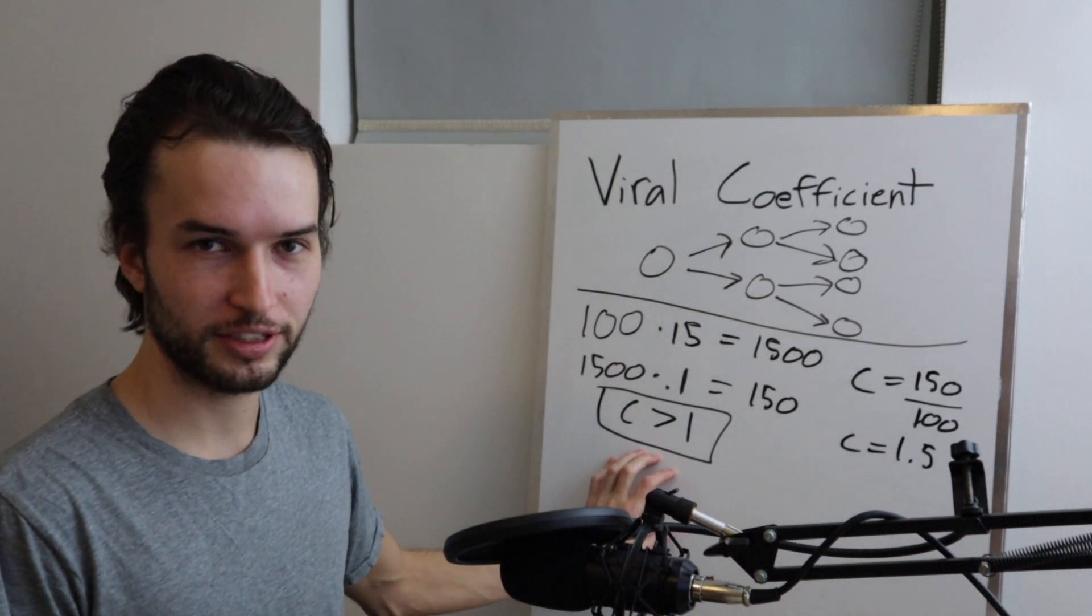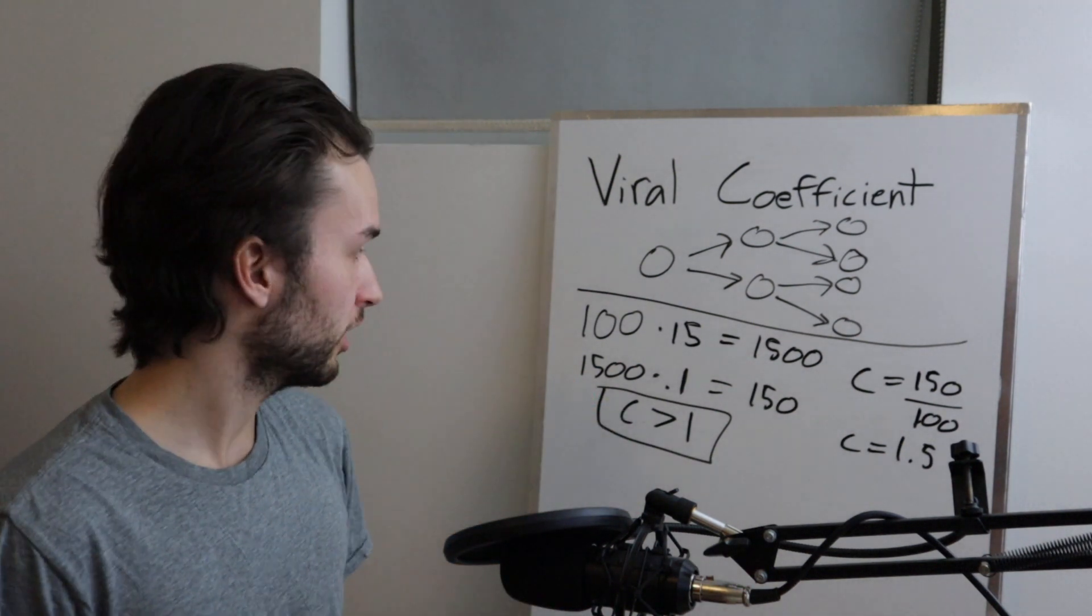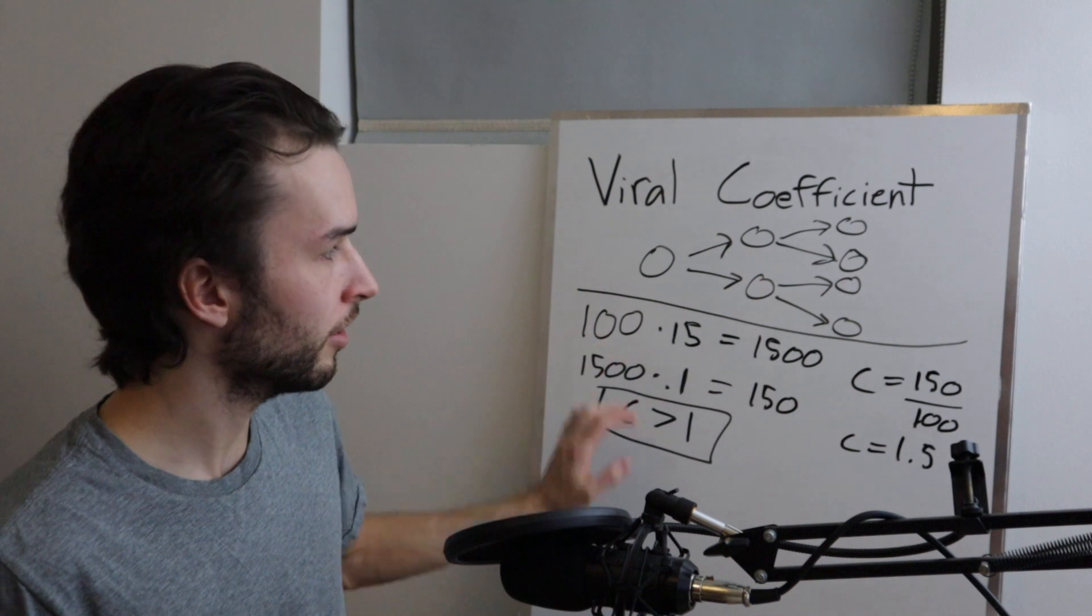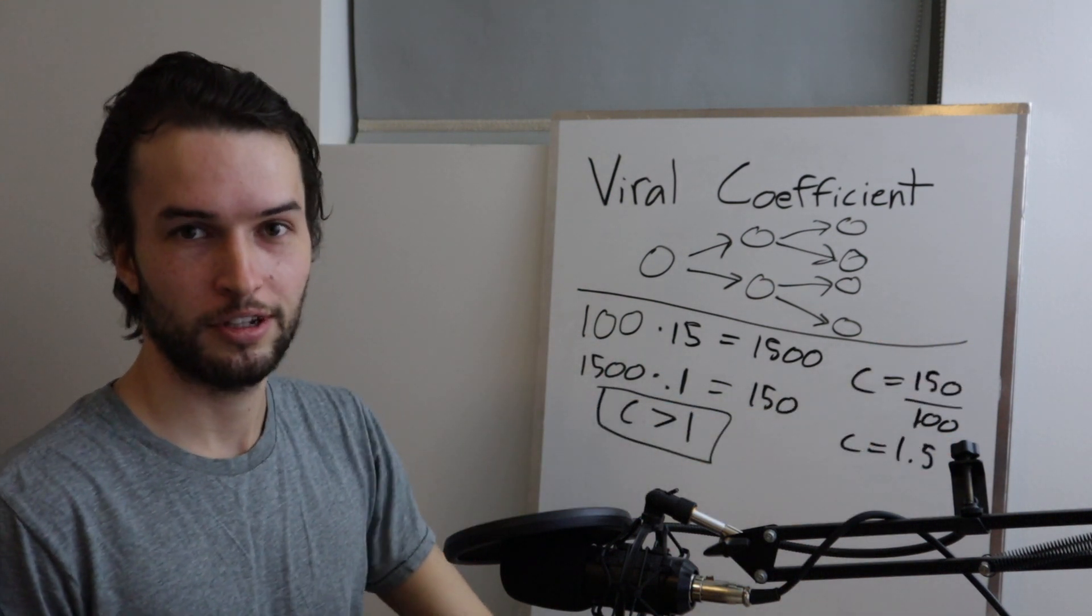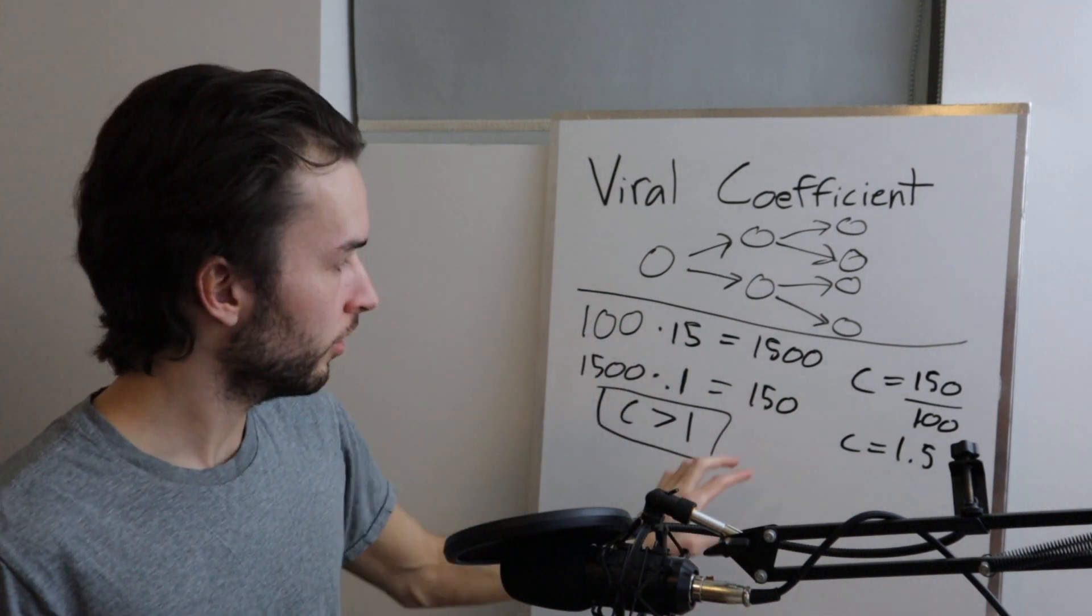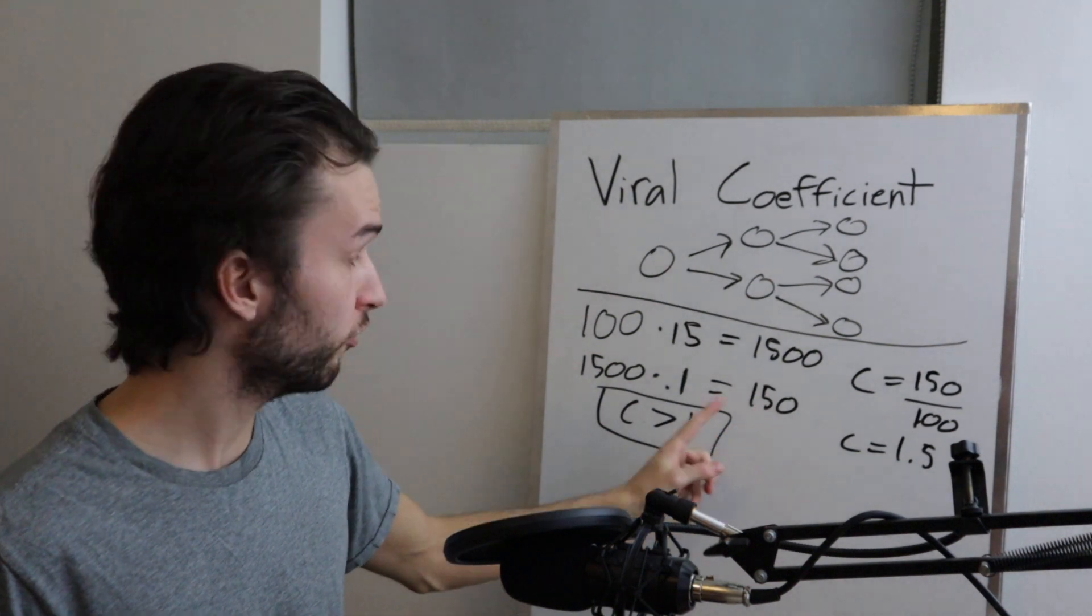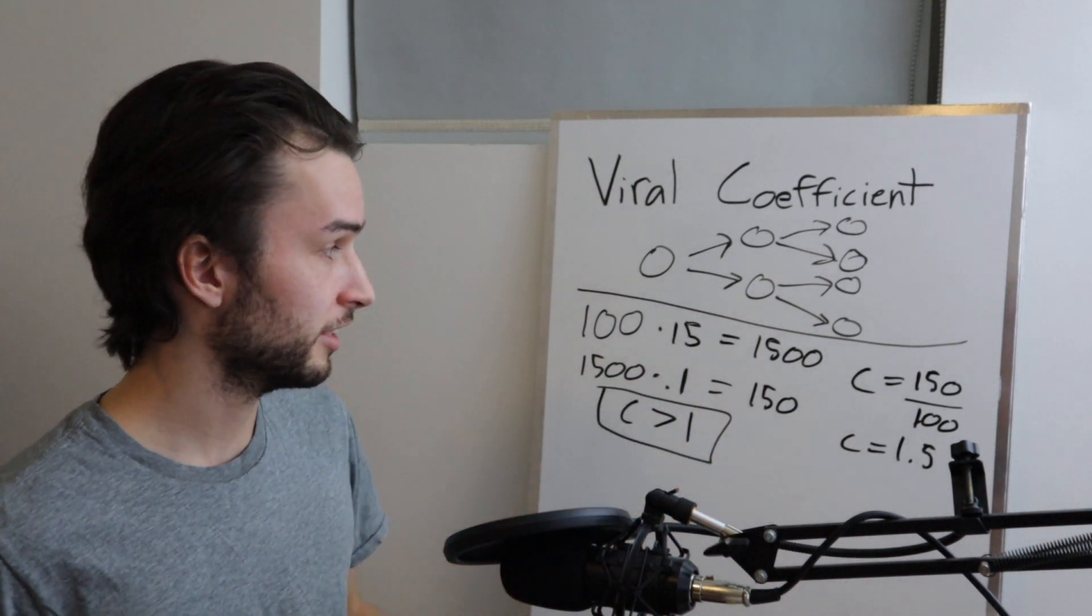So when you're building apps and websites, try and get your viral coefficient above one, and then you're good to go. Each new 100 customers that you get, hopefully they'll give you another 150 customers. And notice how we're not including the original 100 in this 150. These 150 are completely new people from the original.